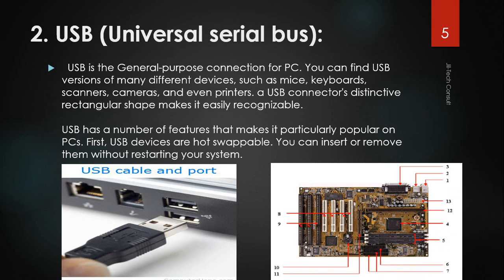The mouse comes with purple and the keyboard with green connectors. Now we have the USB, which is the Universal Serial Bus. The Universal Serial Bus is the general purpose connection for the PC. You can find USB versions of many different devices such as mice, keyboards, scanners, cameras, printers, and more. The USB connector's distinctive rectangular shape makes it easily recognizable. This is the USB port and this is the USB stick.